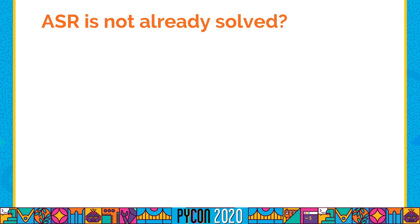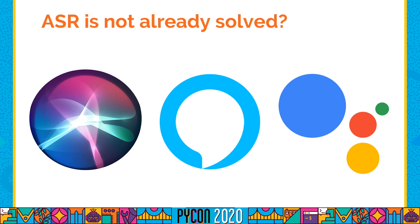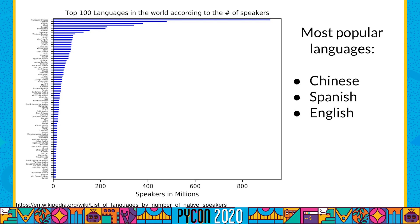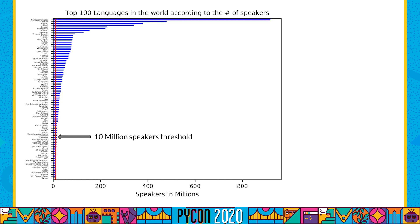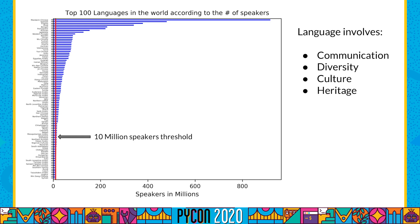Someone could say this problem is already solved — we have Siri, Alexa, Google Assistant, and other assistants we can interact with directly using our voice, and they work pretty well. But there are still some challenges. We can talk about linguistic challenges. Here we have the top 100 languages by number of native speakers. The most popular ones are Chinese, Spanish, and English. These and some other languages are supported by these assistants, but many others don't have such services. Language involves communication, diversity, culture, and heritage, and providing high-level ASR tools could have a direct impact on all these aspects.